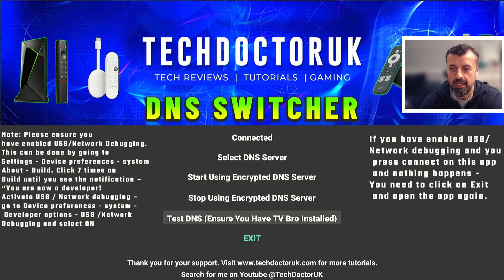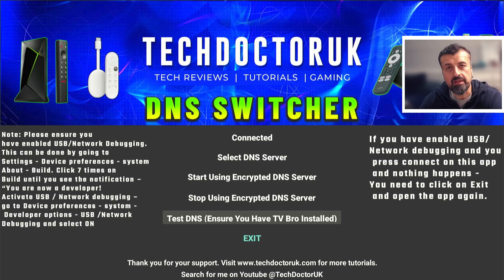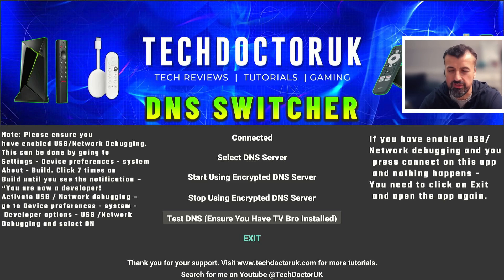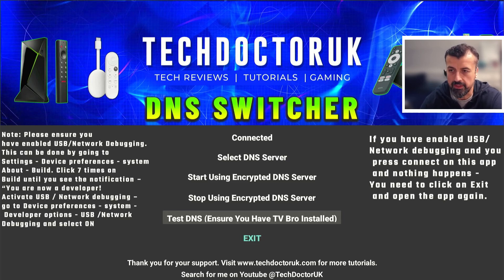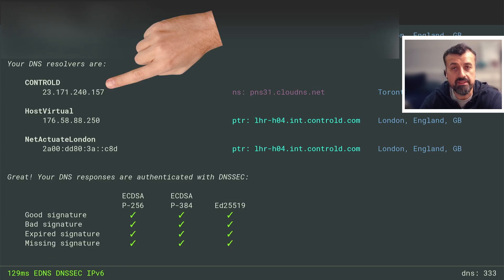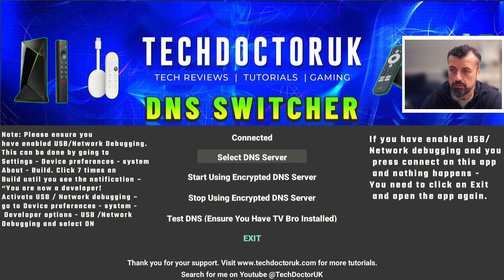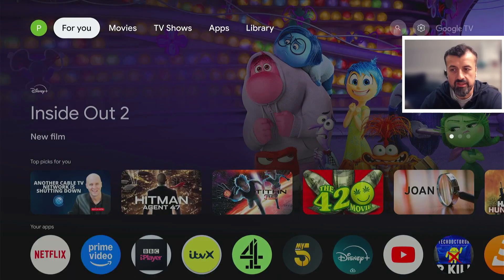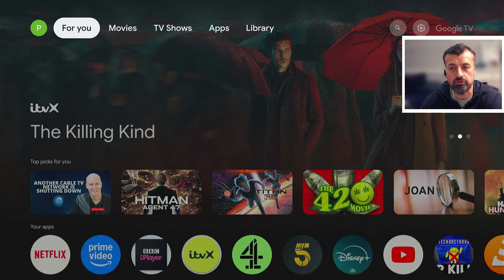In my last video, many of you messaged saying that when you clicked the test button you saw a prompt saying you don't have an application to use this function. The reason is that button wants to open a default browser. The browser I recommend is called TV Bro, which you can install directly from the Play Store. I've now updated the app to tell you to ensure TV Bro is installed. With TV Bro installed I can click the test button, it opens TV Bro, and correctly shows me I'm using the selected DNS servers. I then choose an ad-blocking DNS server, click Start, and click Exit — that's it.